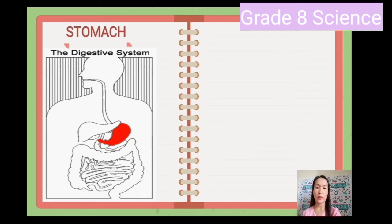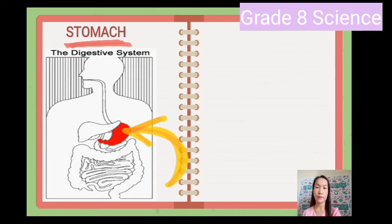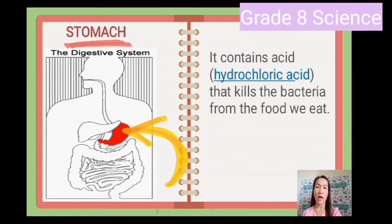Next is the stomach. The stomach is a J-shaped muscular bag that stores the food you eat and breaks it down into tiny pieces. It mixes food with digestive juices that contain enzymes to break down proteins and lipids. It also contains acid called hydrochloric acid that kills the bacteria from the food we eat.